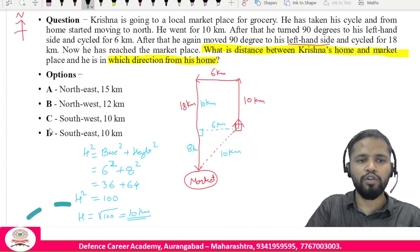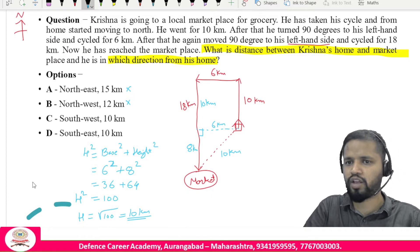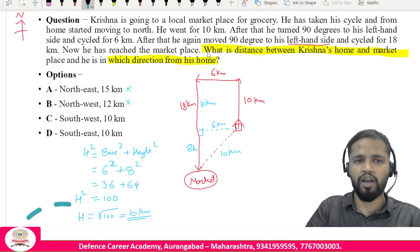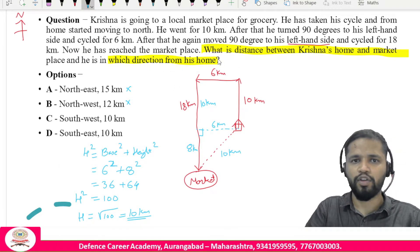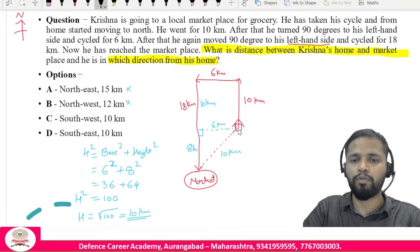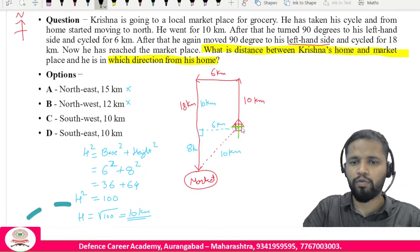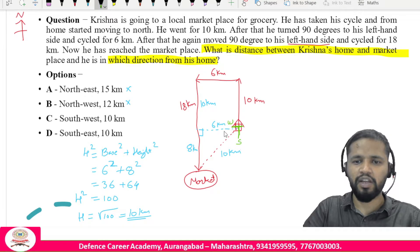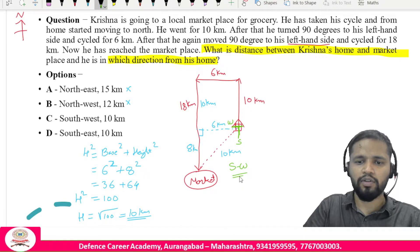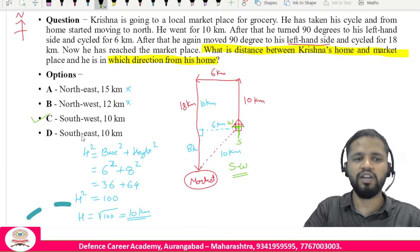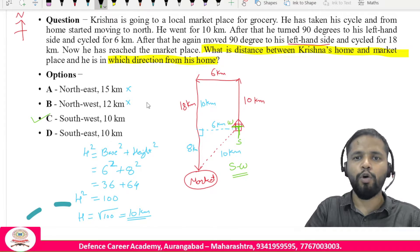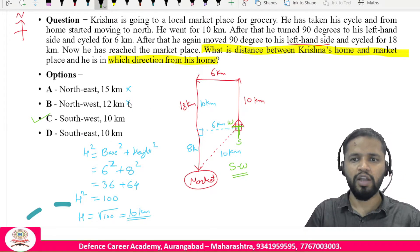For the direction question: the market is south and west of home, so it is in the southwest direction. The answer is southwest and 10 kilometers — option C.